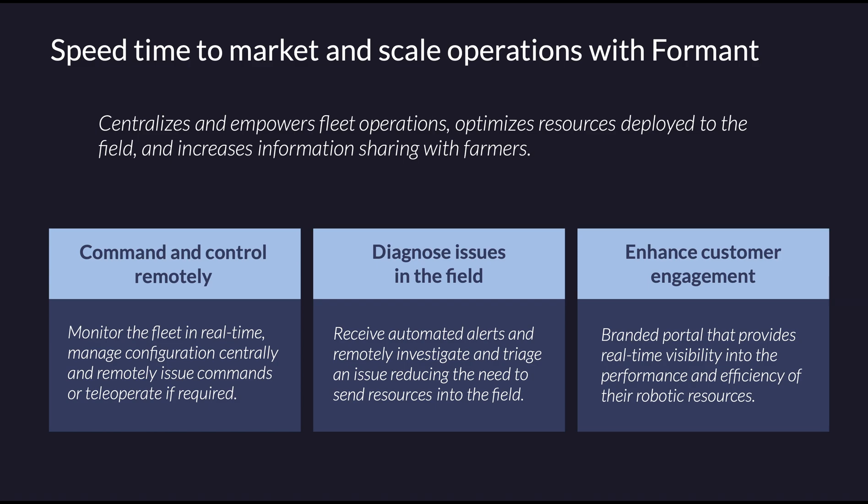The three most common specific ways that we see agricultural robotics companies use Formant are: to command and control remotely to fill in gaps in an autonomy system; to diagnose issues with field-deployed robots remotely by going back in time to figure out the root cause of an issue; and to enhance their customers' engagement by providing visibility into the work that a fleet is doing for their farms.